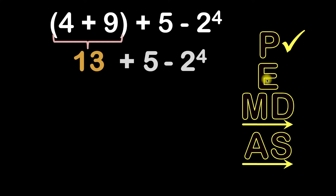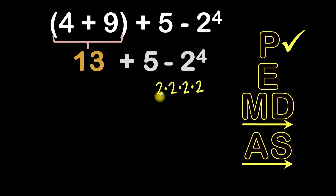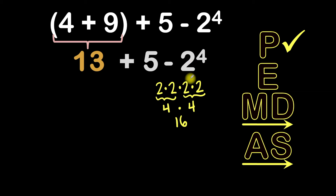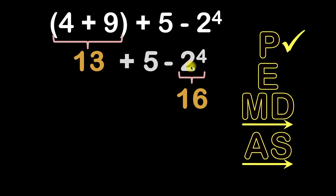Step two is E for exponents. Do you see any exponents in this expression? Right here — this is 2 to the fourth. Remember what this means: 2 to the fourth means 2 times 2 times 2 times 2. Two times 2 is 4, and 4 times 4 is 16. So 2 to the fourth is equal to 16. I'll put that right under here. Do you see any other exponents? Nope.